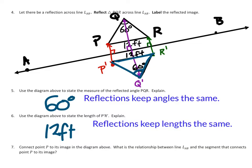Number seven: Connect point P to its image in the diagram above. What is the relationship between line AB and the segment that connects point P to its image? As we've drawn on this, it's a 90-degree angle, which means that the two lines are perpendicular.